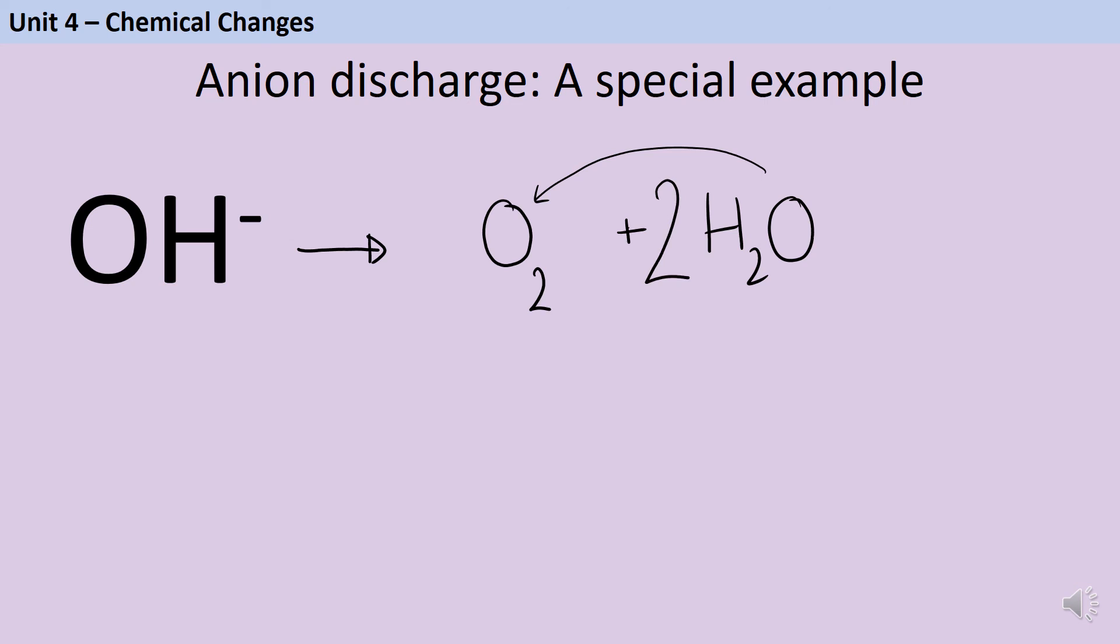And so that's going to give me four hydrogens and two oxygens, and then the other two oxygens go over here. So in order to have these four hydrogen atoms that I need, I'm going to need four hydroxide ions.